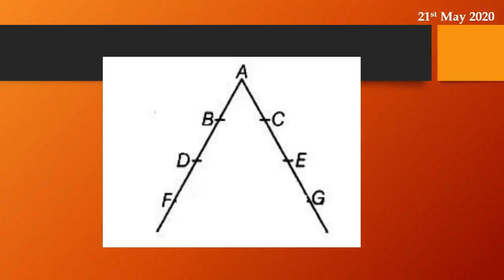Whereas, if A gives the authority to B and C to take certain decisions, and B and C start taking some decisions — this is the example of decentralization, where, being top management, A need not take all decisions. Some decision-making power is also given to B and to C, and in the same way it goes to the lower levels.